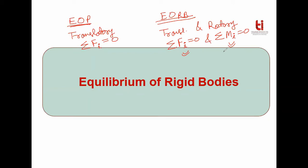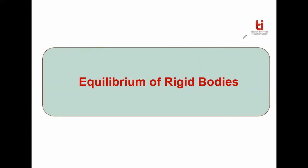In this topic, these two equilibrium equations will be used. The rest of the procedure will be almost the same as equilibrium of points. Your first step is to draw a free body diagram. Then, at different points, you apply the equilibrium equations — summation of Fi equals zero and summation of Mi equals zero — at different points to solve the problems.